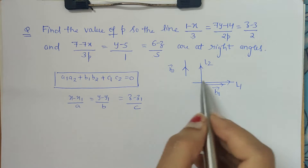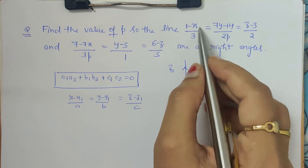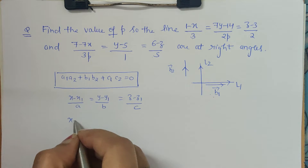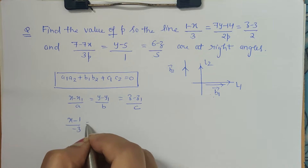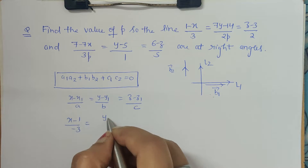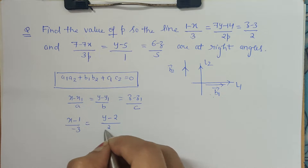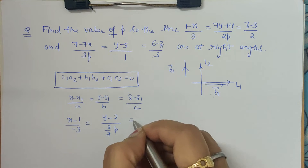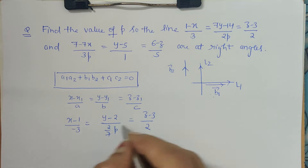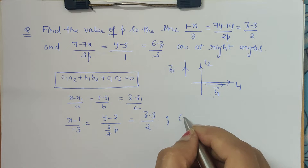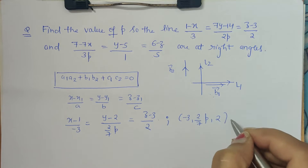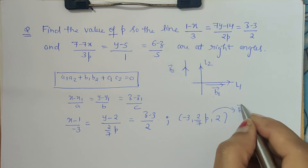Let's write the first equation in standard form. Taking minus sign common gives us (x − 1)/(−3). Taking 7 outside gives (y − 2)/(2/7p), and z − 3 over 2 needs no change. Now it is in standard form, so the direction ratios for b1 are: −3, 2/7p, and 2.